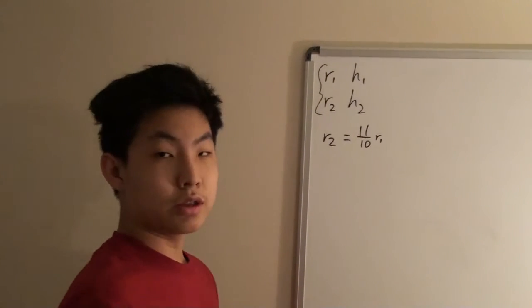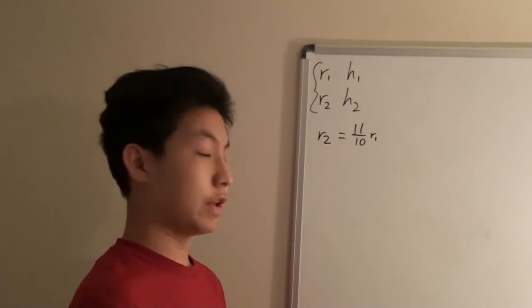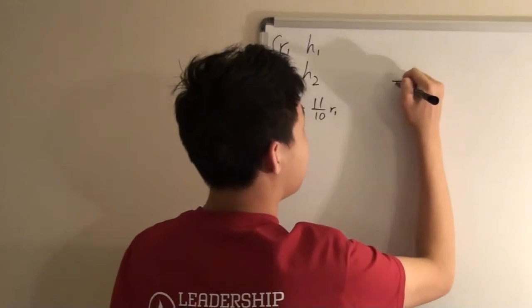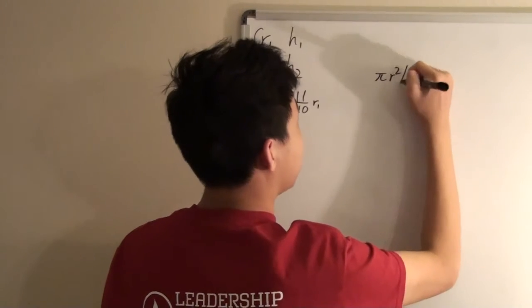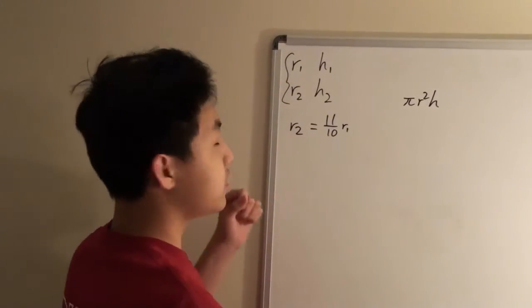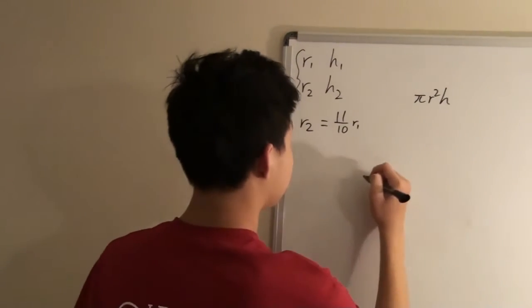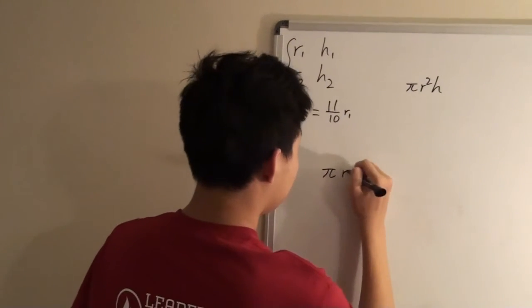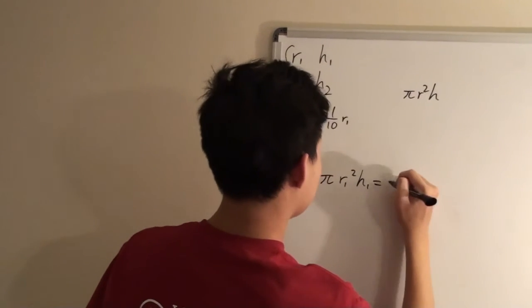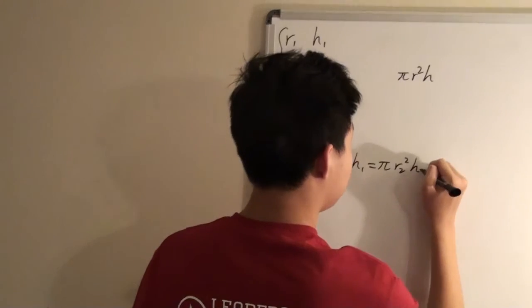Now we can use the formula for finding the volume of a cylinder, which is πr²h. Since these two cylinders have equal volume, we can set them equal to each other: πr₁²h₁ = πr₂²h₂.